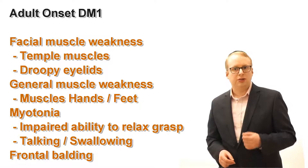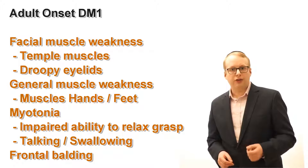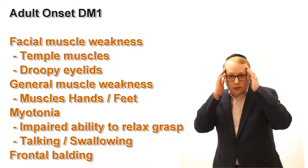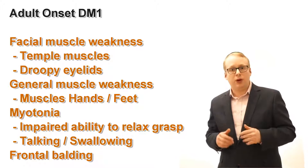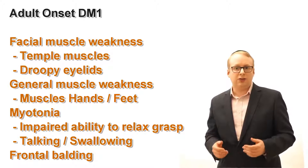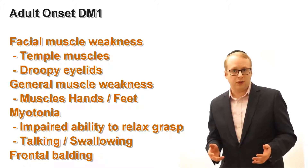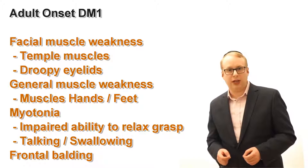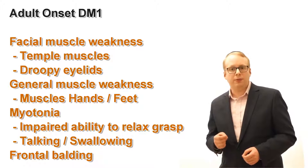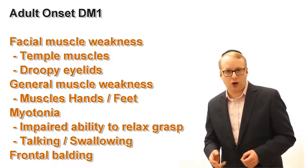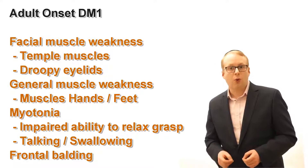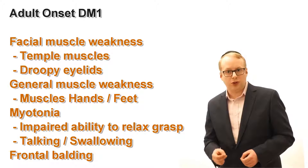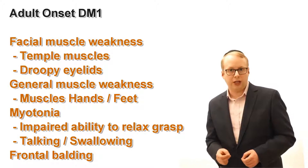Adult onset DM1 often has facial muscle weakness leading to wasting of the temporalis muscles together with drooping eyelids and weakness in the muscles of the hands and feet. Clinical myotonia is often problematic in the hands with impaired ability to relax grasp and can also cause problems when chewing or talking. Frontal balding is also a well-recognised feature.